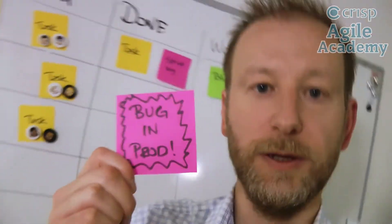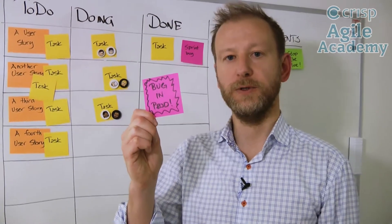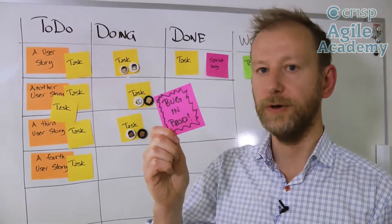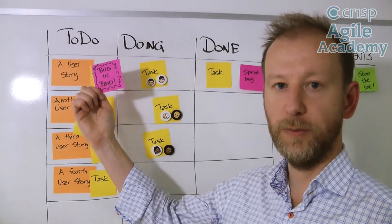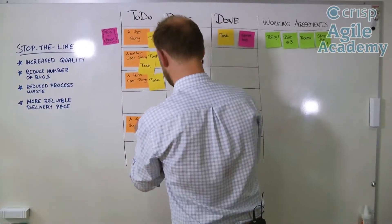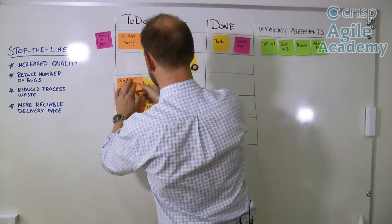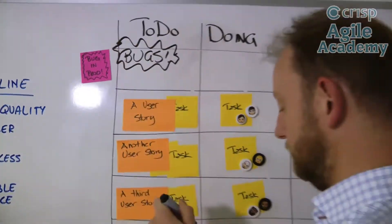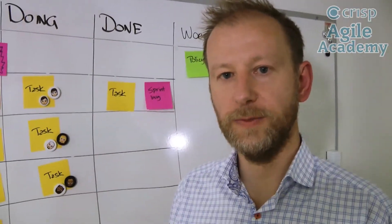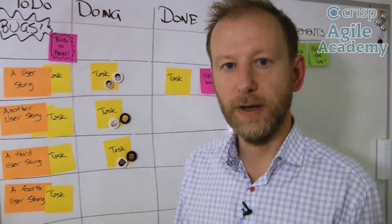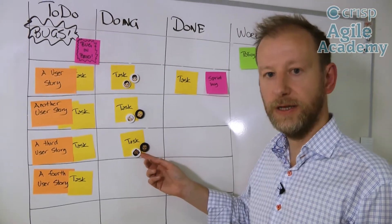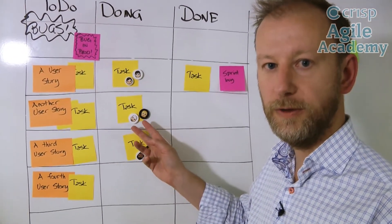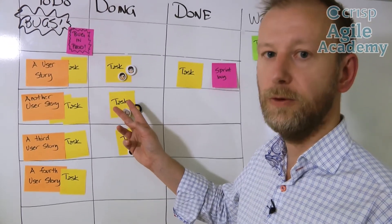Oh my God, someone's found a bug in production — what do we do now? This is where we have to stop the total line. This is the most important thing to fix, so it has the highest priority and must go to the top of the scrum board. We need to fix a new swim lane for the bugs in production. Preferably we stop the line of those who are working with the least prioritized user story, but if that's not possible, really any pair can work on it. It's more important to fix the bug in production than to put more features into an already malfunctioning system.